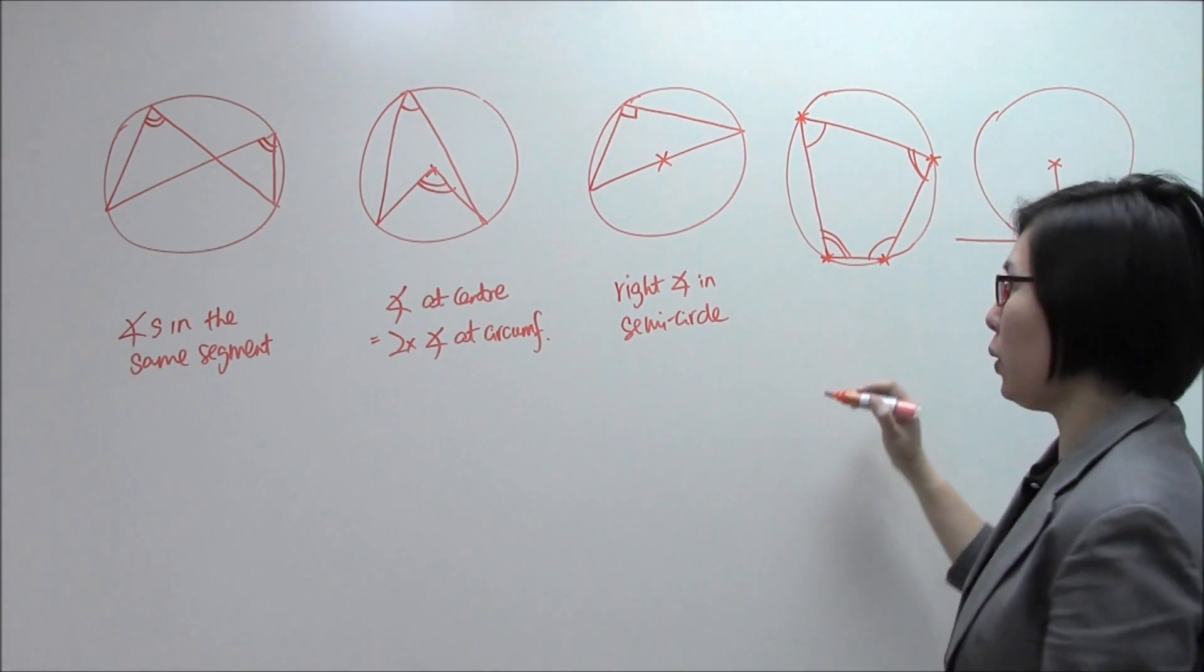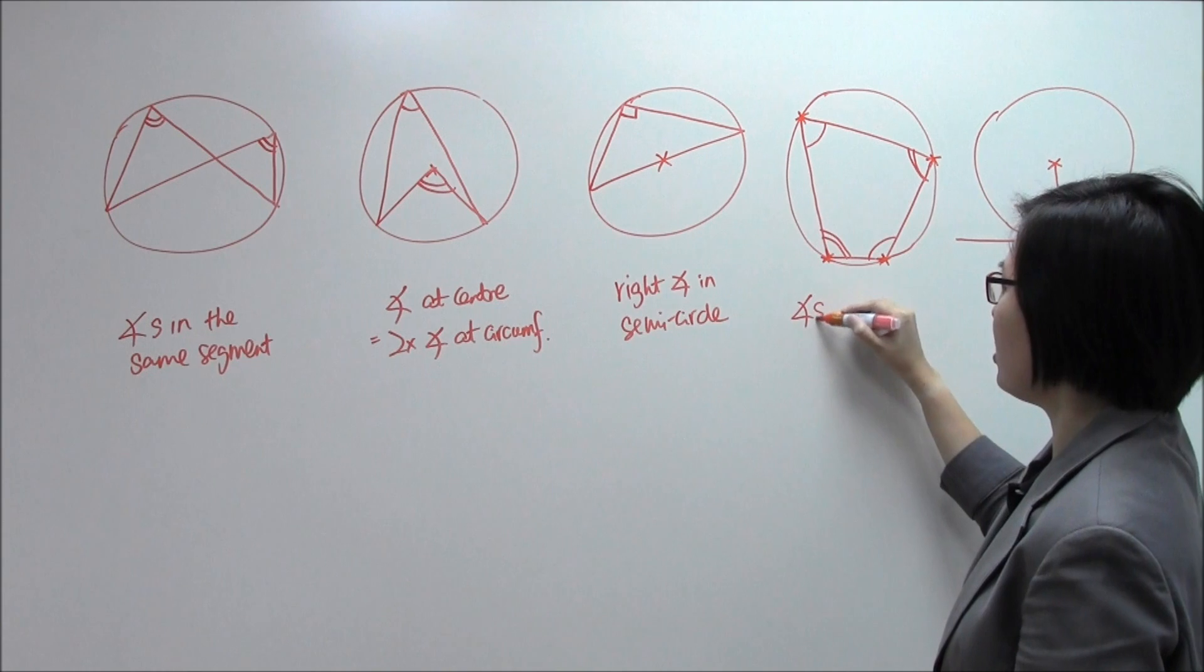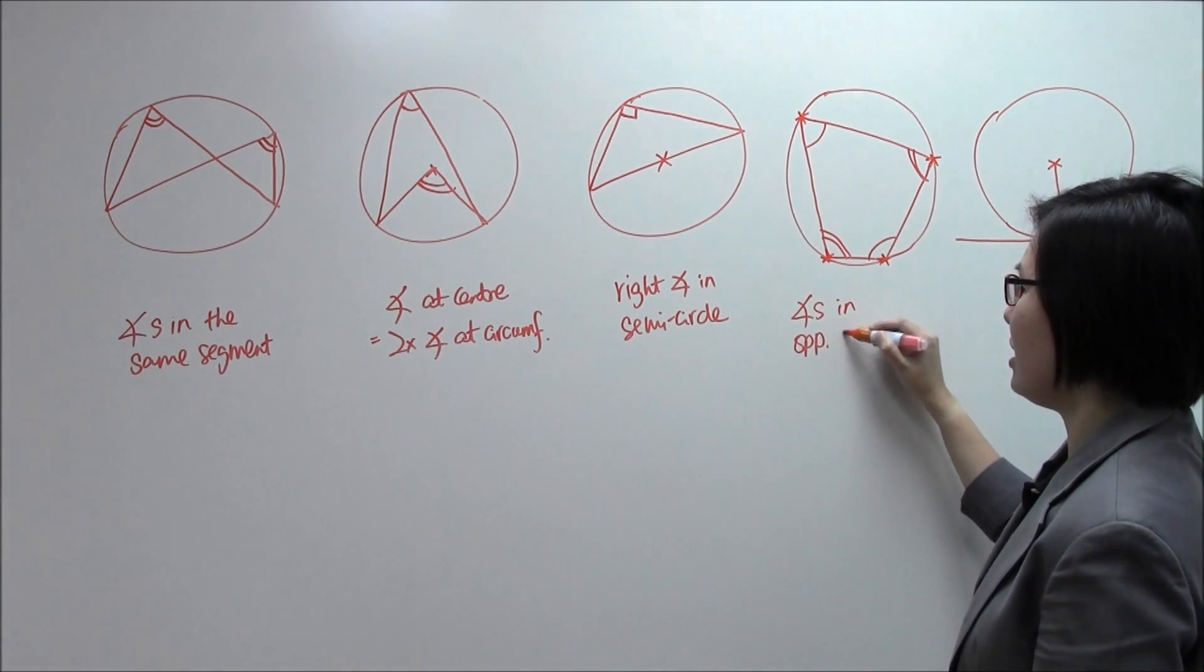These two angles here will add up to 180. The same apply for these two angles. The name of this property, we call it angles in opposite segment.